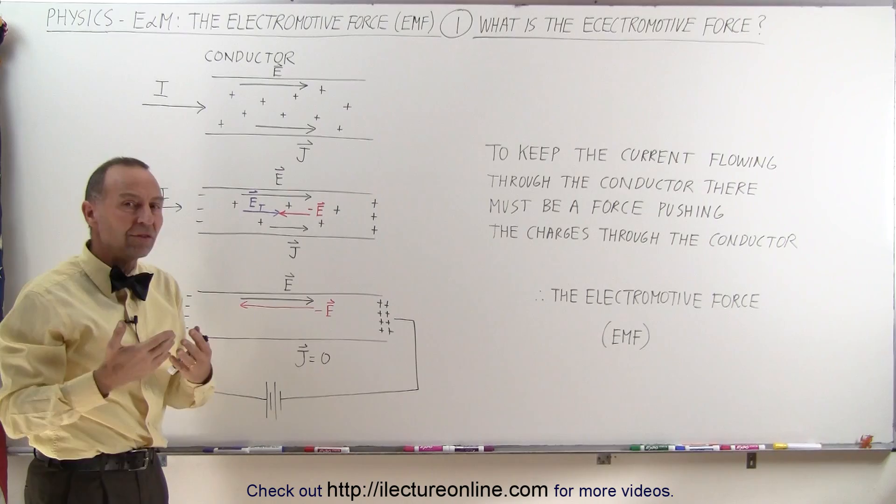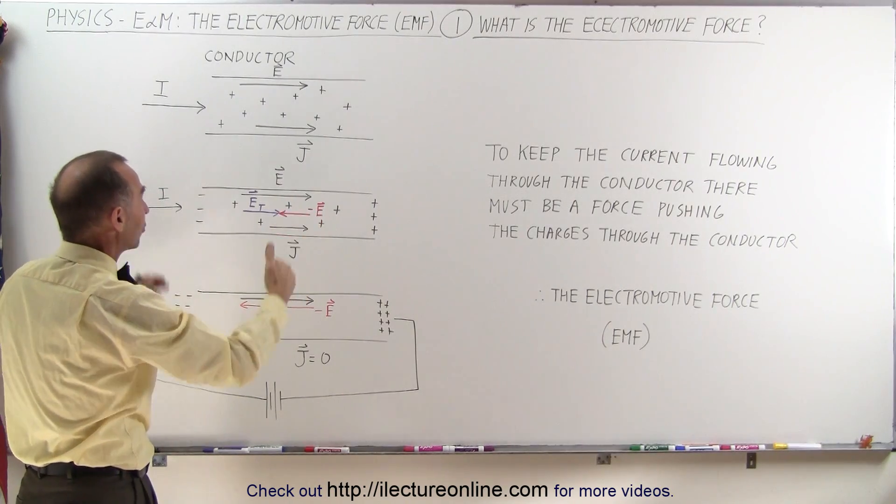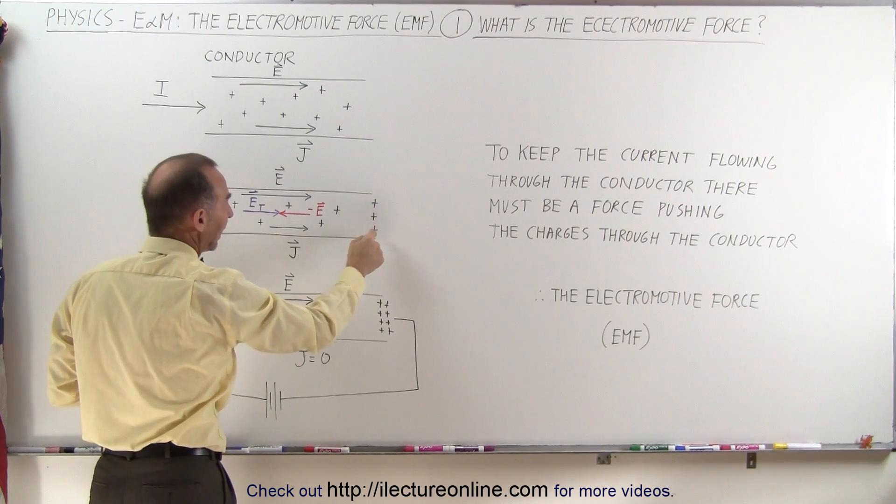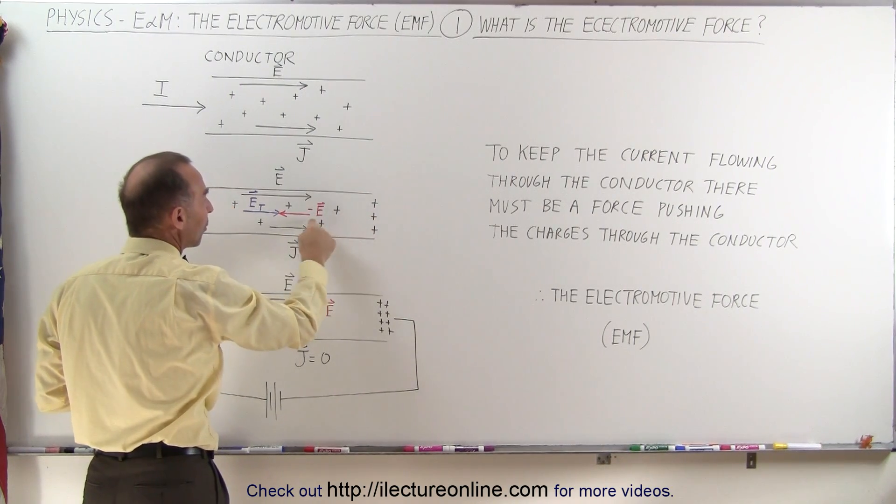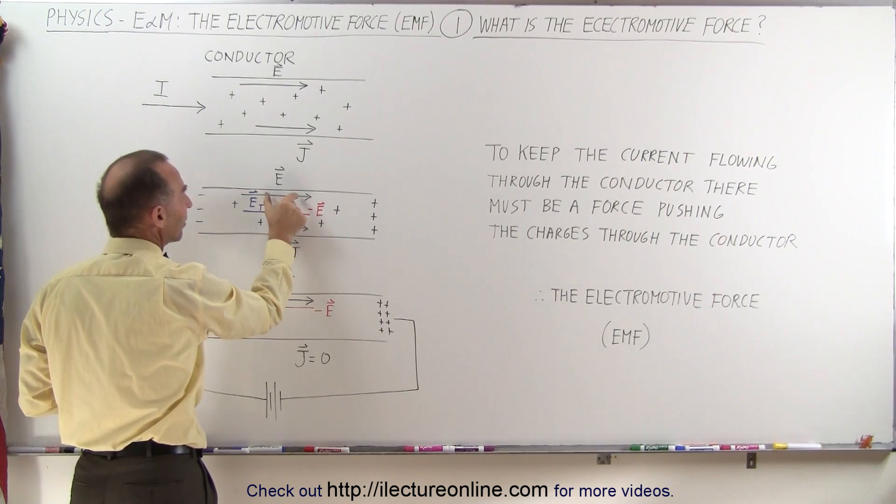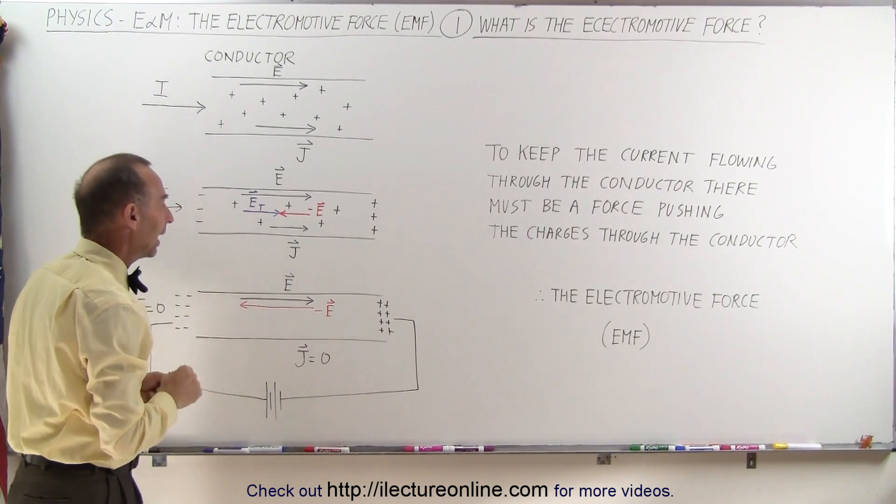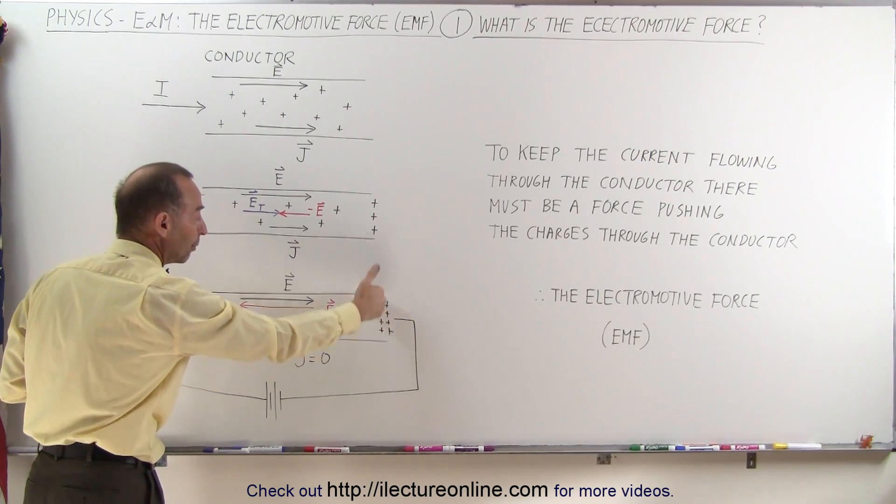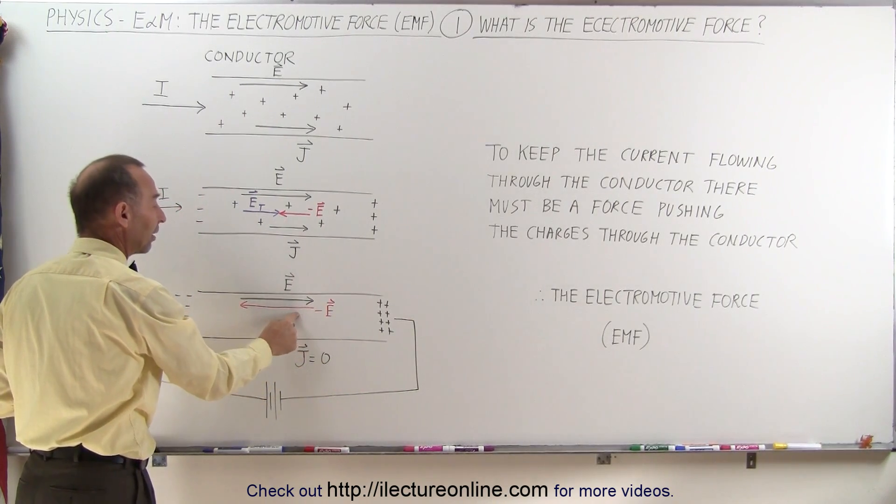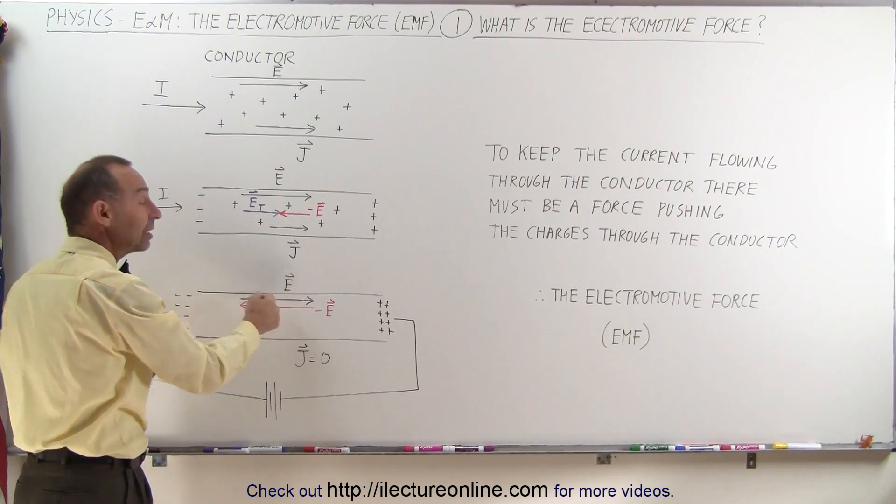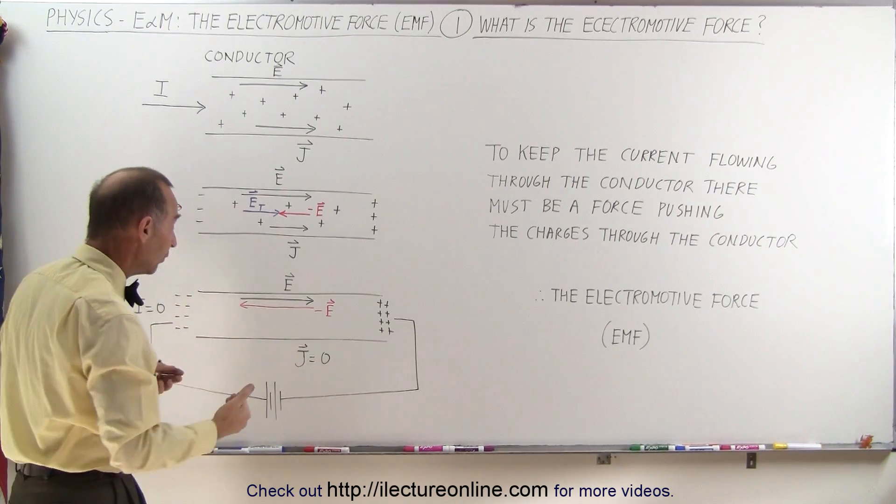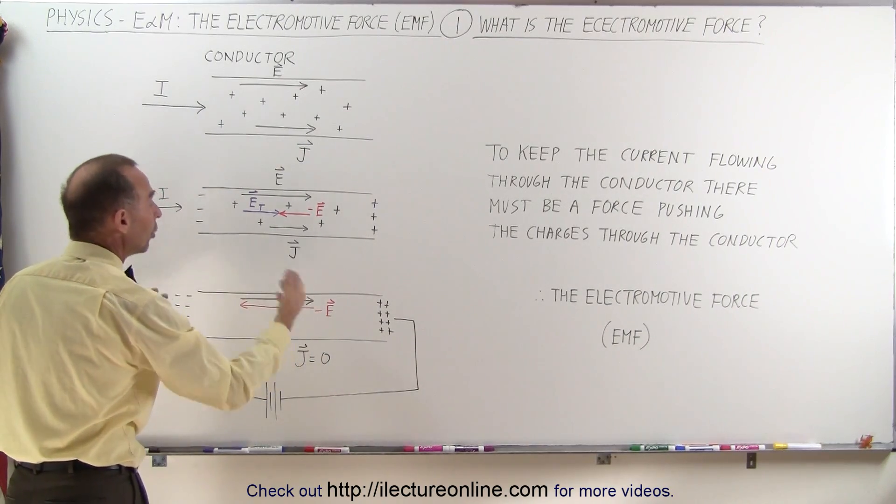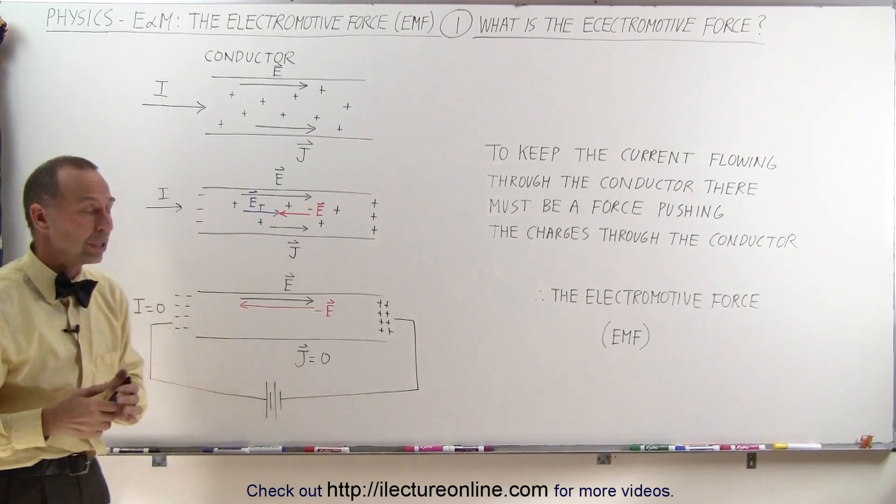But then the problem was that if you just had a conductor and charges were flowing through it, they would begin to pile up at the end, and those charges would then set up a reversed electric field that begins to cancel out the existing electric field. Eventually, as more charges pile up, the reversed electric field would completely cancel out the existing field, and therefore the current would stop, the current density would be zero, and there would no longer be any current flowing through the conductor.